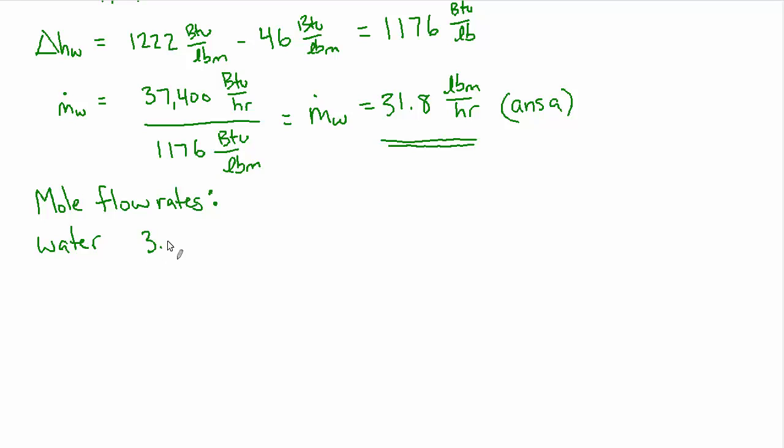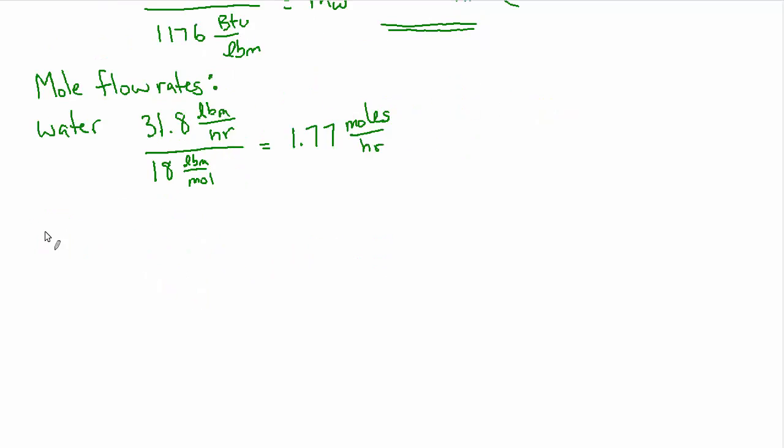So let's do that first part of going from mass flow rates to mole flow rates. So starting with the water, we have 31.8 and the molecular weight of water is 18, right? 16 for oxygen and one for hydrogen is two of them. So 18 pounds per mole. And that gives us 1.77 moles per hour. That's for the water. Now for the air. Now the molecular weight of air, you may remember that it's 29 pounds per mole. And if you remember that, great.